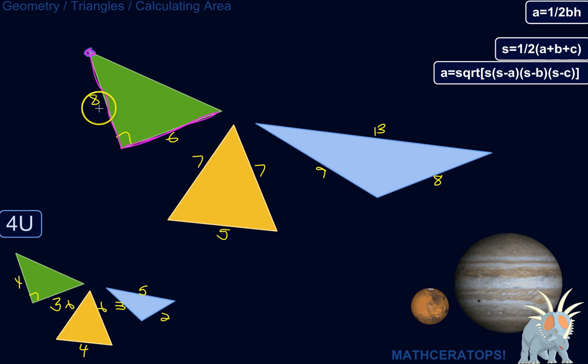Okay, so one-half base times height. So for this triangle, one-half, let's call that the base. Let's call that the height, four. One-half, six times eight. One-half, six is three. Three times eight is 24. So the area of that triangle would be 24 units squared. So pretty easy.